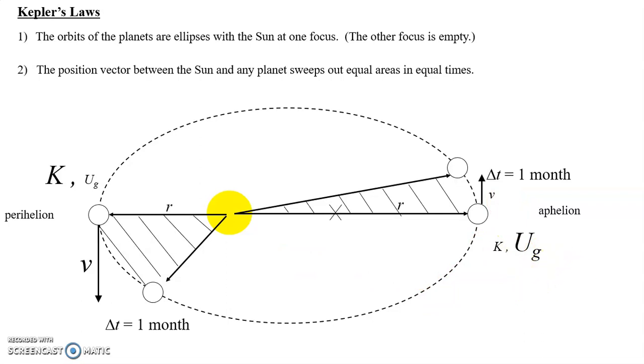However, as one grew, the other shrank, and so we realize this is just a restatement of conservation of mechanical energy. Obviously, the only force acting on the planet here is the gravitational force, which is a conservative force. And so the sum of kinetic and gravitational potential energies is always going to be constant.